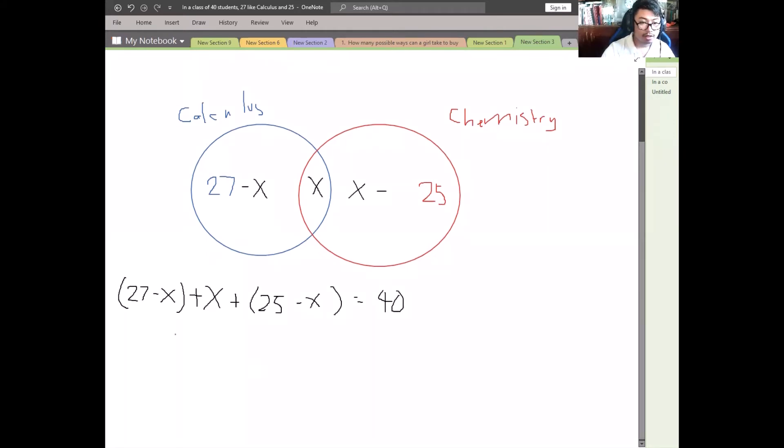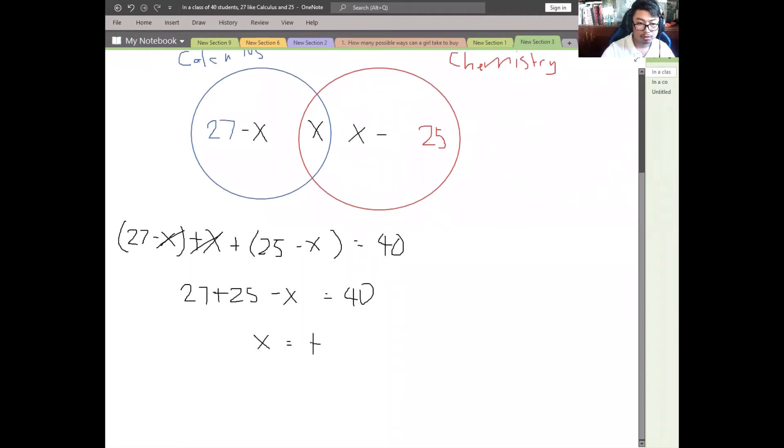When simplifying, we can cancel out. Therefore, simplifying, the number of students like both calculus and chemistry are 12. This is the final answer.